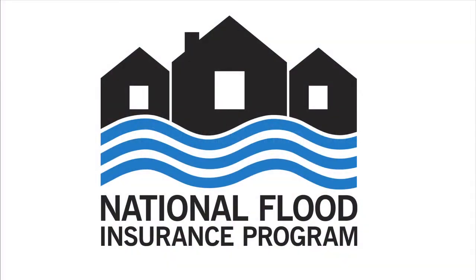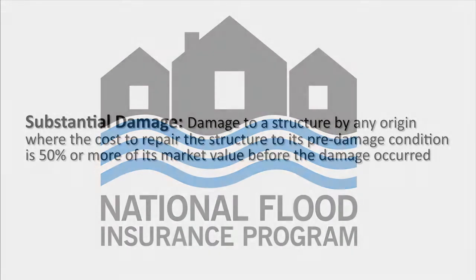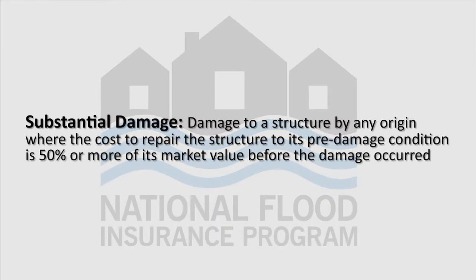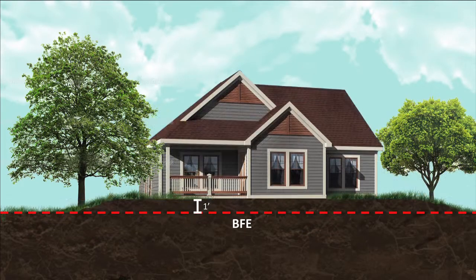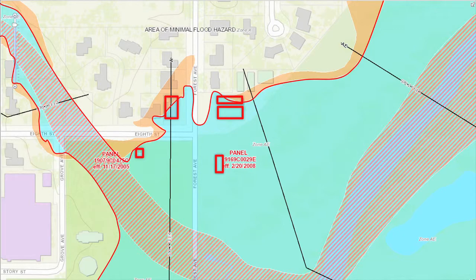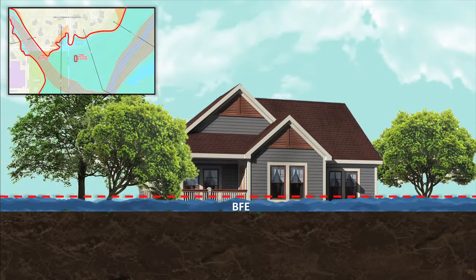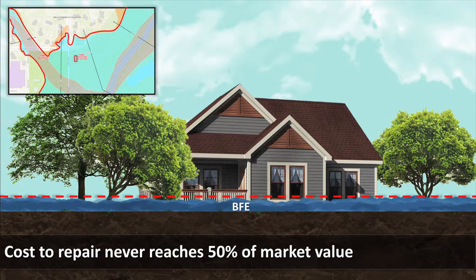As also discussed in Video 16, the NFIP defines substantial damage to mean damage to the structure by any origin where the cost to repair the structure to its pre-damaged condition is 50% or more of its market value before the damage occurred. The community's floodplain ordinance requires that substantially damaged structures must be brought into compliance with the elevation or flood proofing requirements for new construction. It is not uncommon for structures within a community to be frequently damaged by flood but where the cost to repair those structures after each event never reaches 50% of their market value, causing such structures to often deteriorate over time.